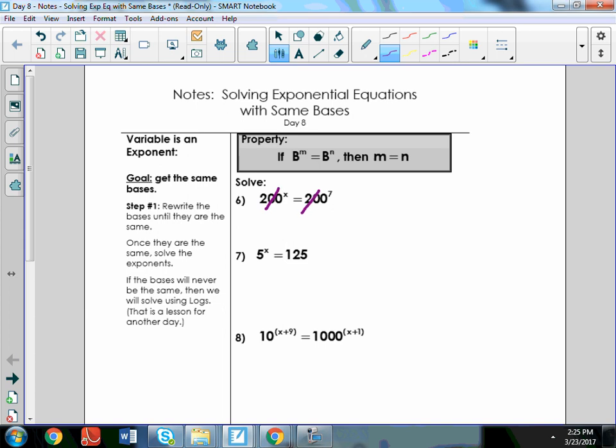So, these bases are both 200. They're already the same. And you get to cross them off. And then I just write what the exponents are. So, x equals 7, and that's my answer.